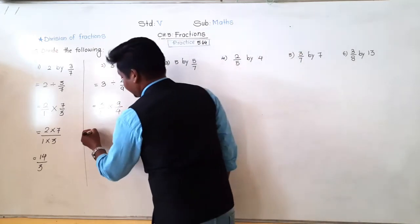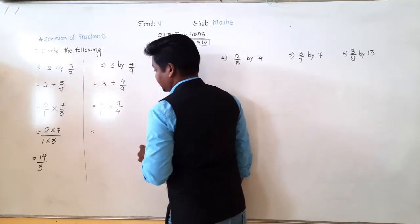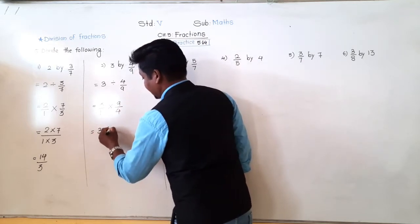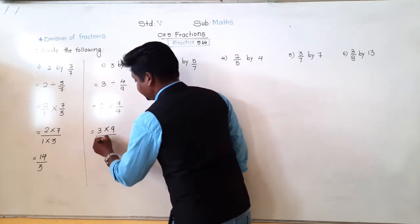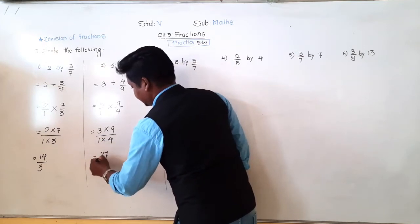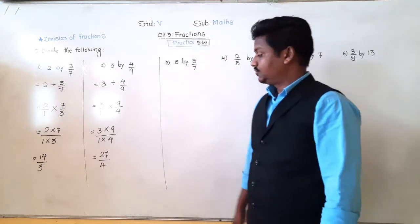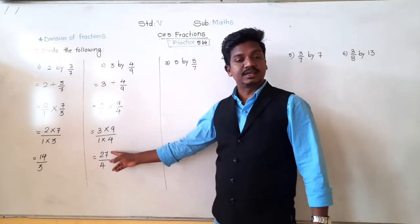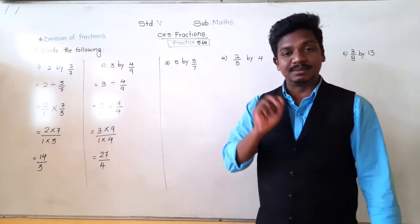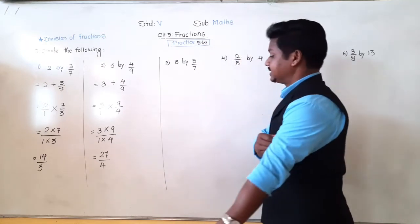Now we have the multiplication of two fractions. When we do multiplication, we multiply numerator with numerator and denominator with denominator. That is: 3 × 9 = 27, and 1 × 4 = 4, giving 27 upon 4. We can convert this into smallest term — check if 27 and 4 are in any same table. No, so it remains as 27 upon 4.